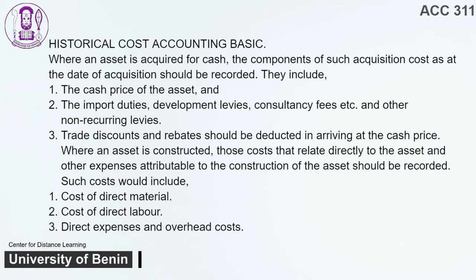Historical Cost Accounting Basis. Where an asset is acquired for cash, the components of such acquisition cost as at the date of acquisition should be recorded. They include: 1. The cash price of the asset. 2. Import duties, development levies, consultancy fees, and other non-recurring levies. 3. Trade discounts and rebates should be deducted in arriving at the cash price. Where an asset is constructed, those costs that relate directly to the asset and other expenses attributable to the construction of the asset should be recorded.